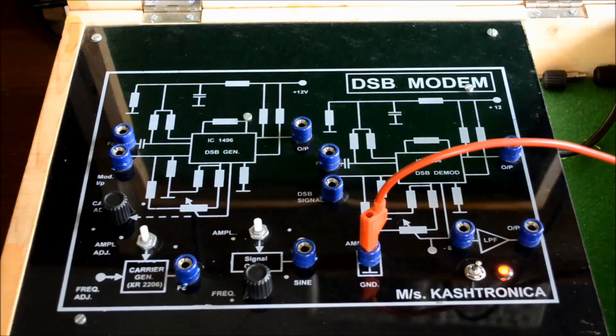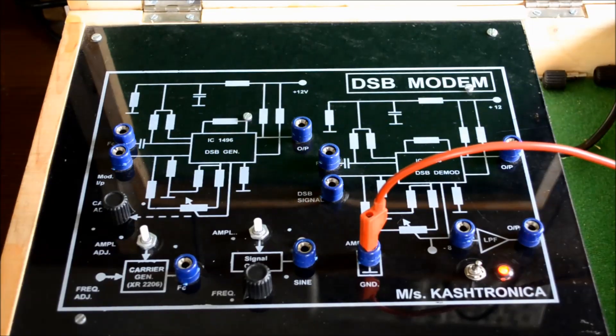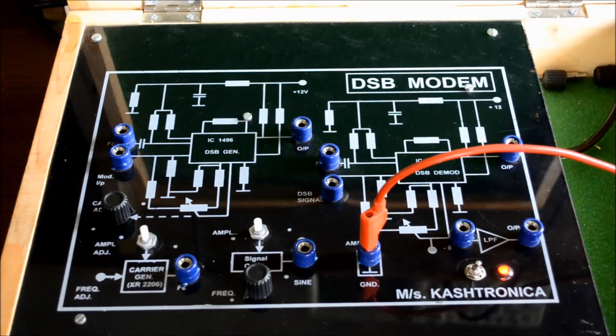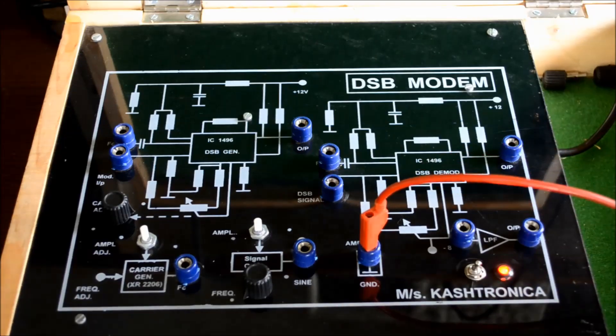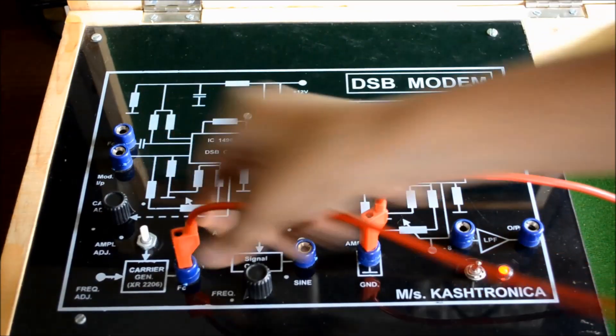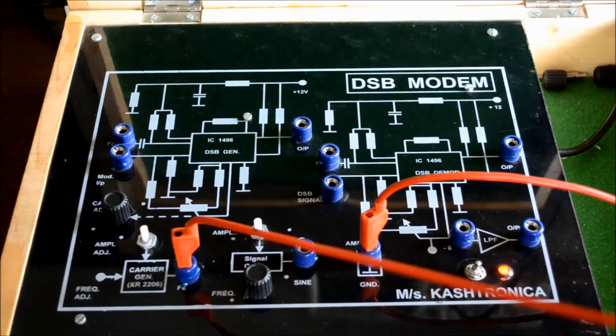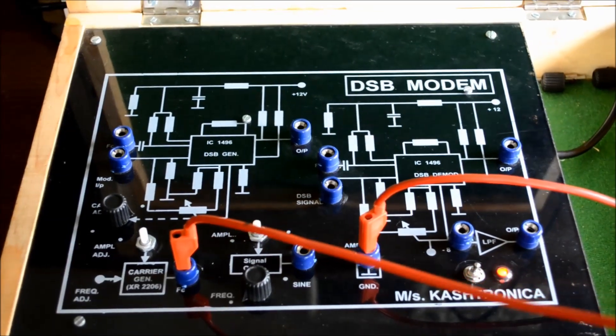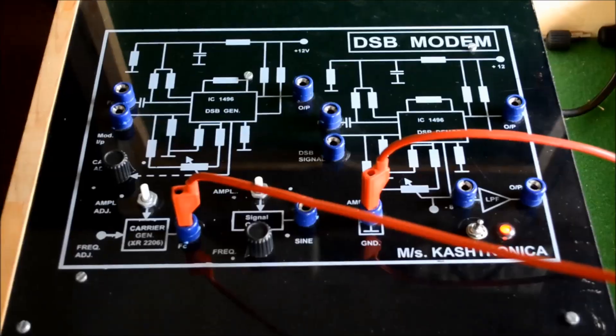Hello viewers, we are performing DSB-SC generation. Here we are using IC 1496 for generating DSB-SC. We are connecting the carrier frequency, the carrier signal. Just note down the amplitude of the carrier.